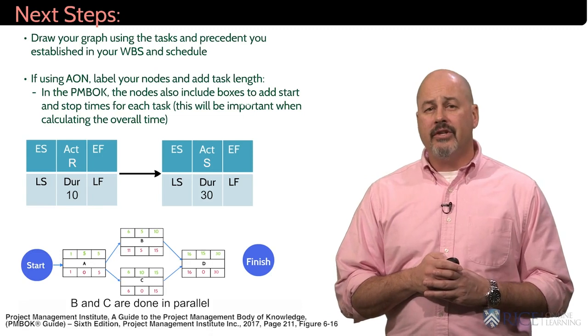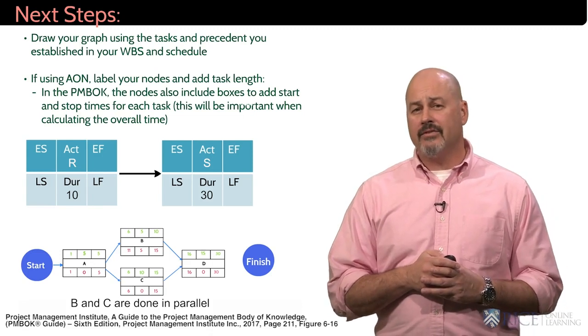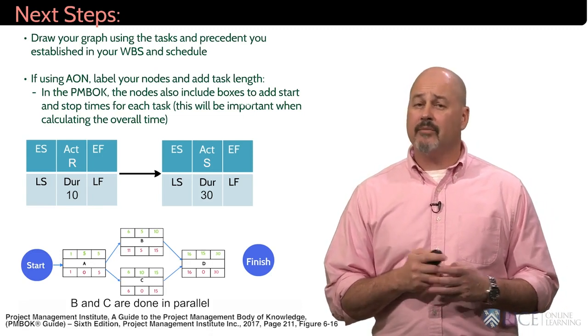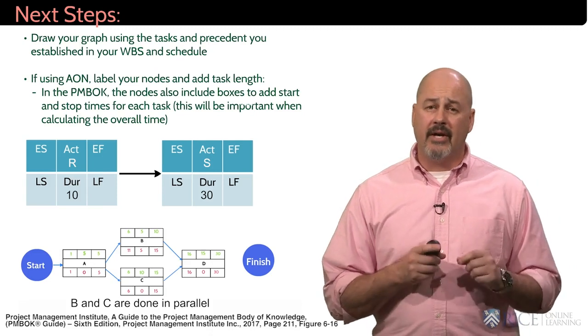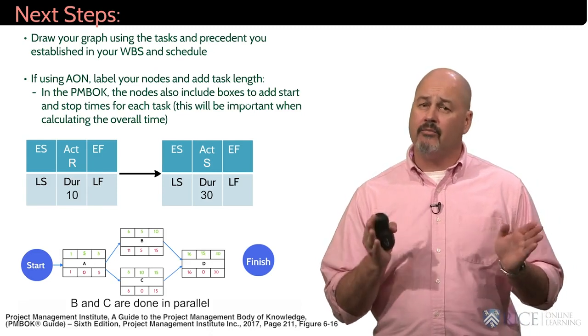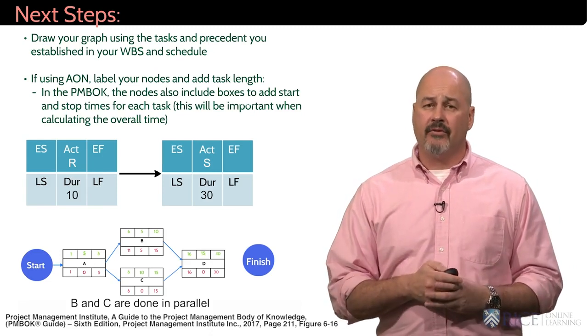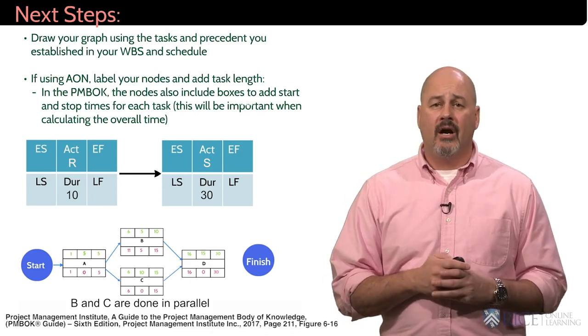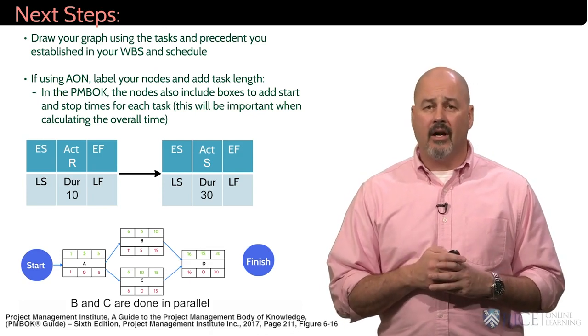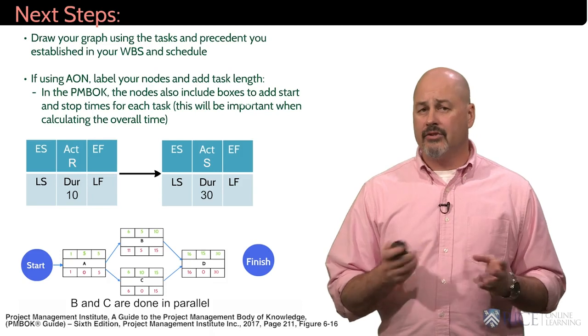Remember, you can use either letters or number combinations for tasks. For a larger project, it may be better to use a number combination like 1.1, 1.2, because you have more combinations available, but for this example we're going to use a very simple lettering nomenclature for simplicity.